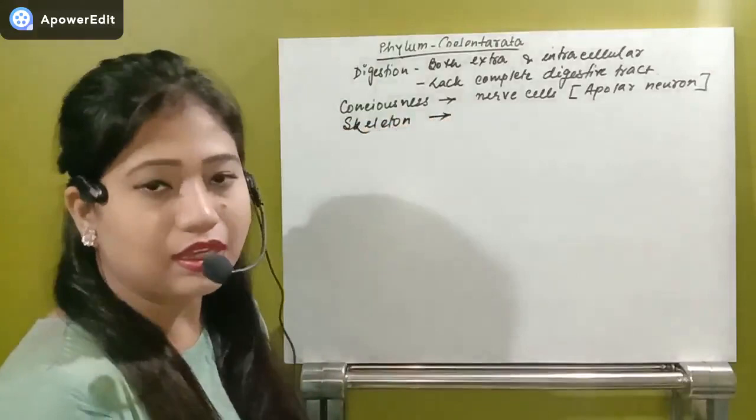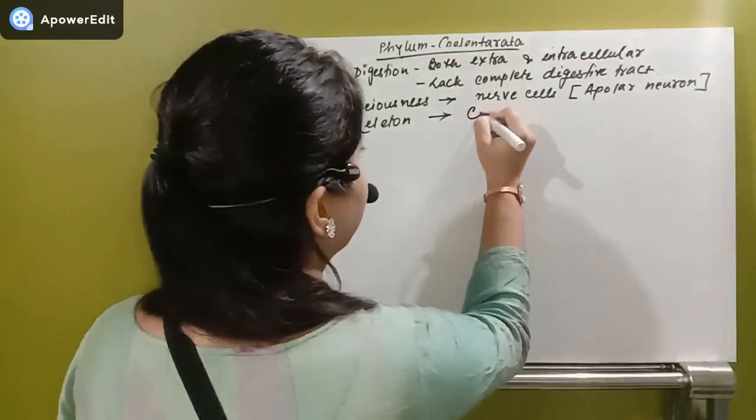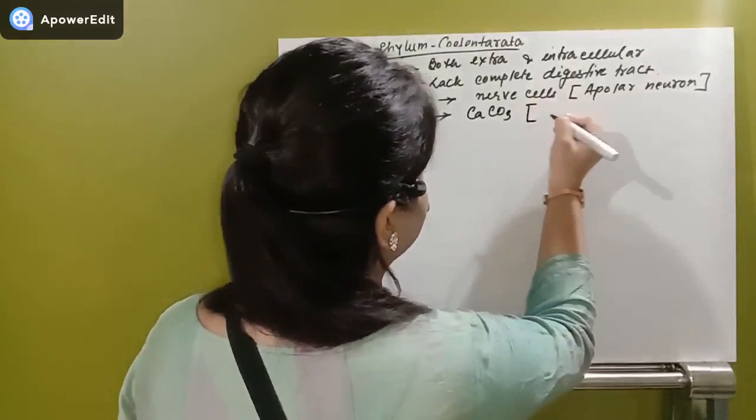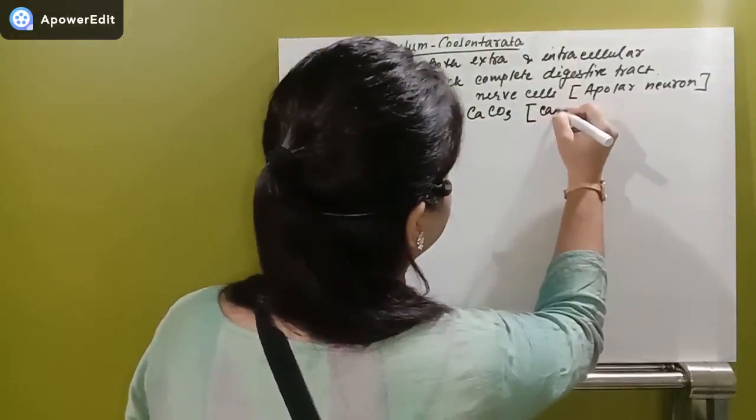Regarding skeleton: some species like corals have a specific outermost covering made of calcium carbonate. So they have a calcareous skeleton.